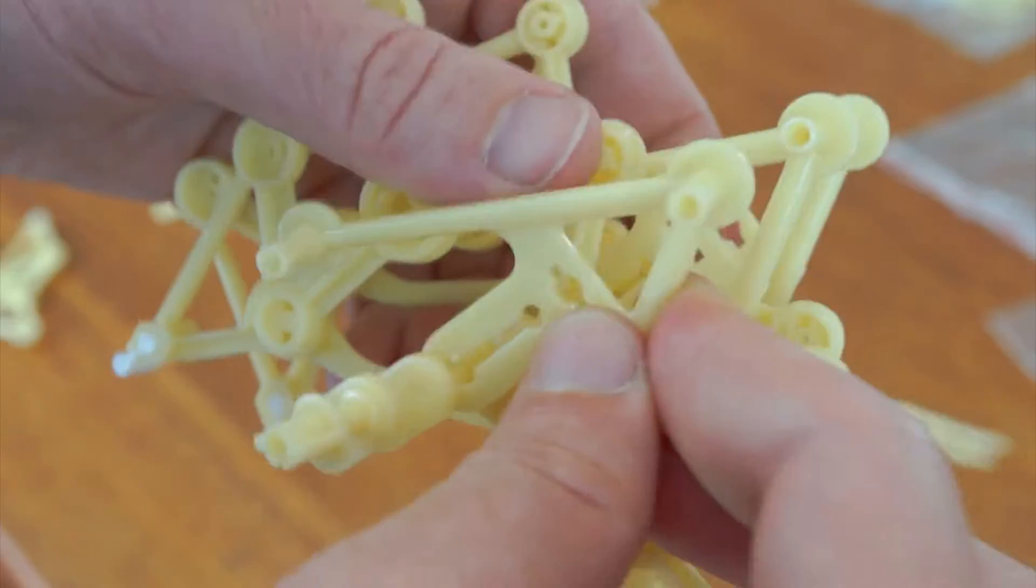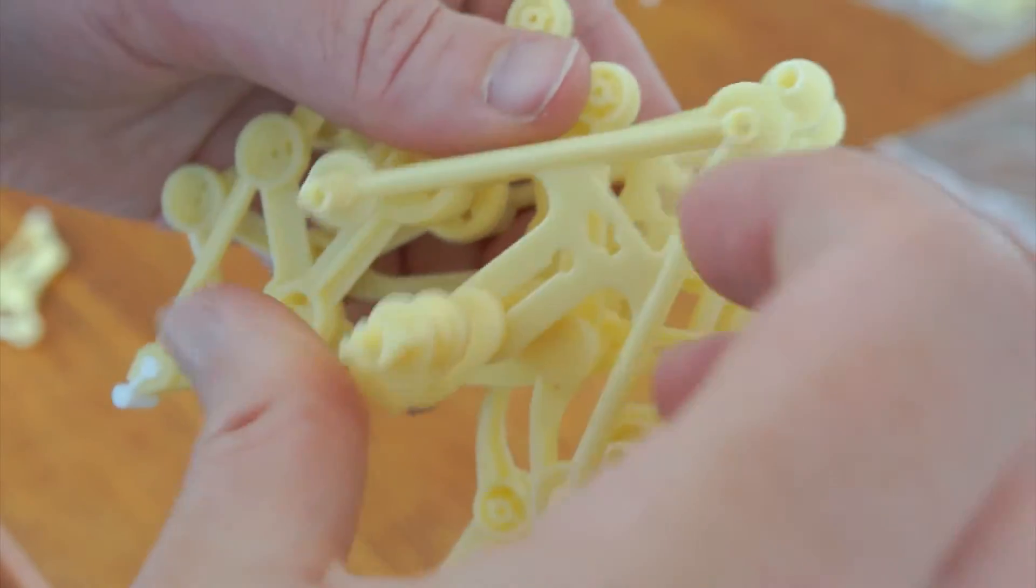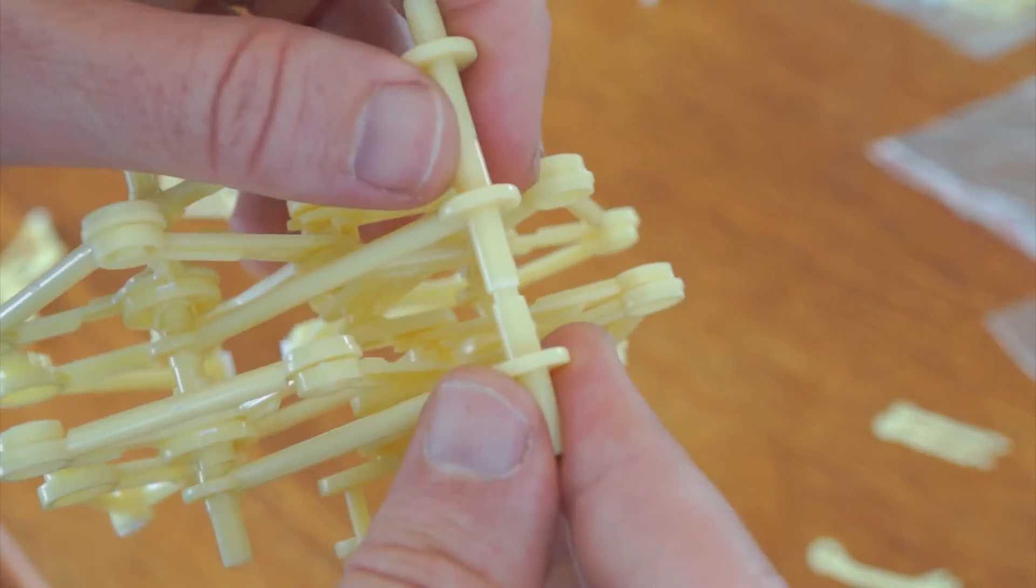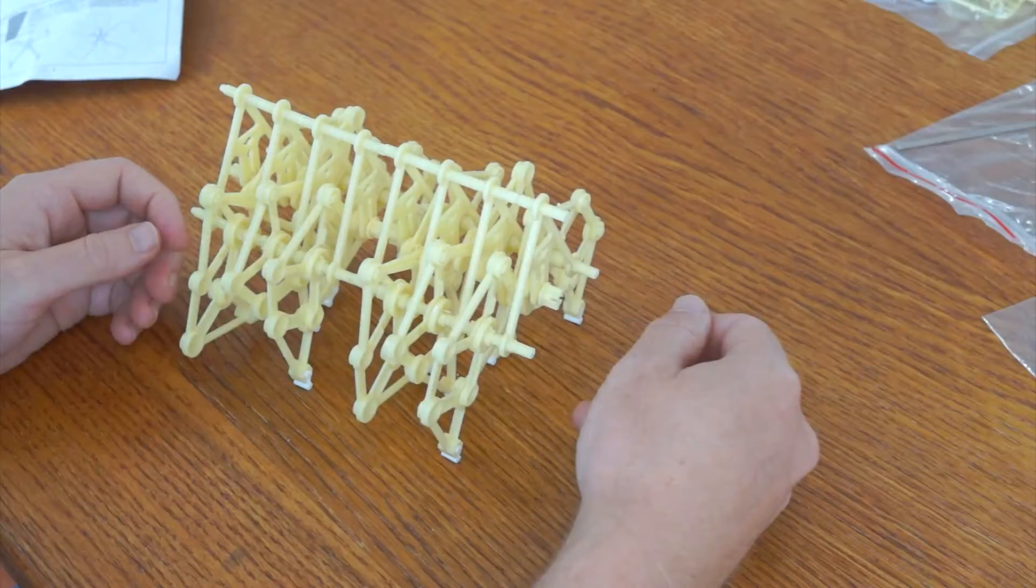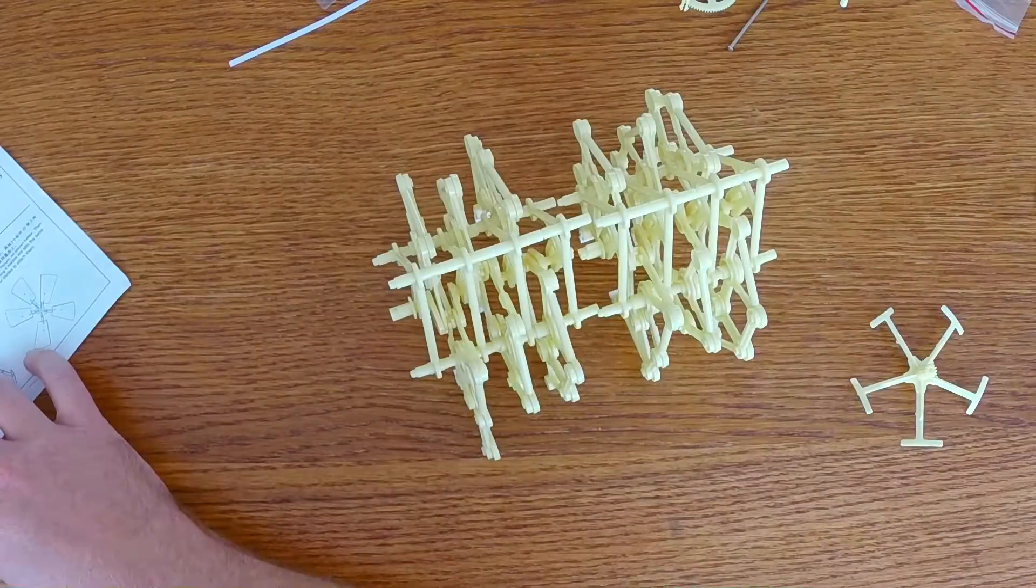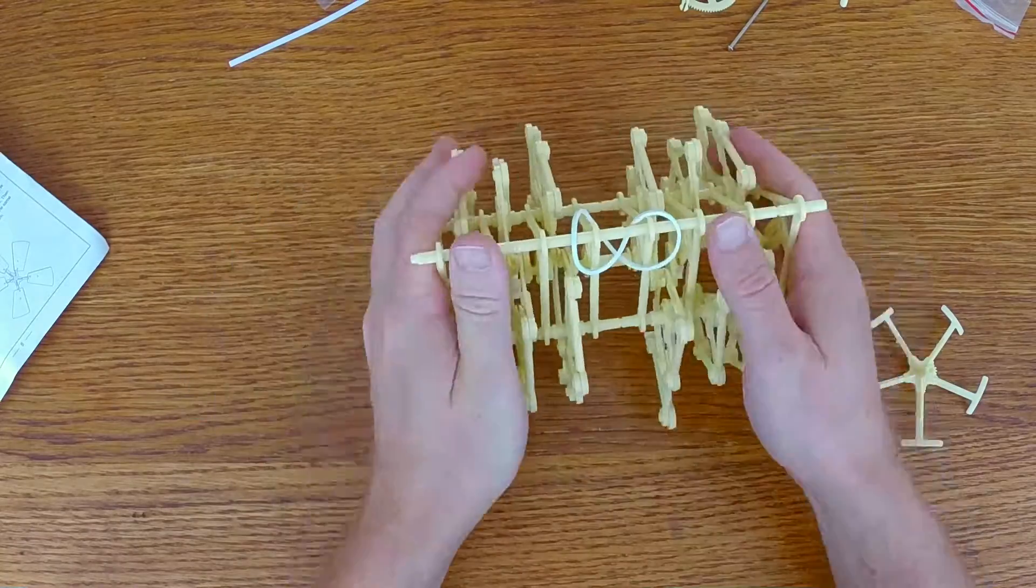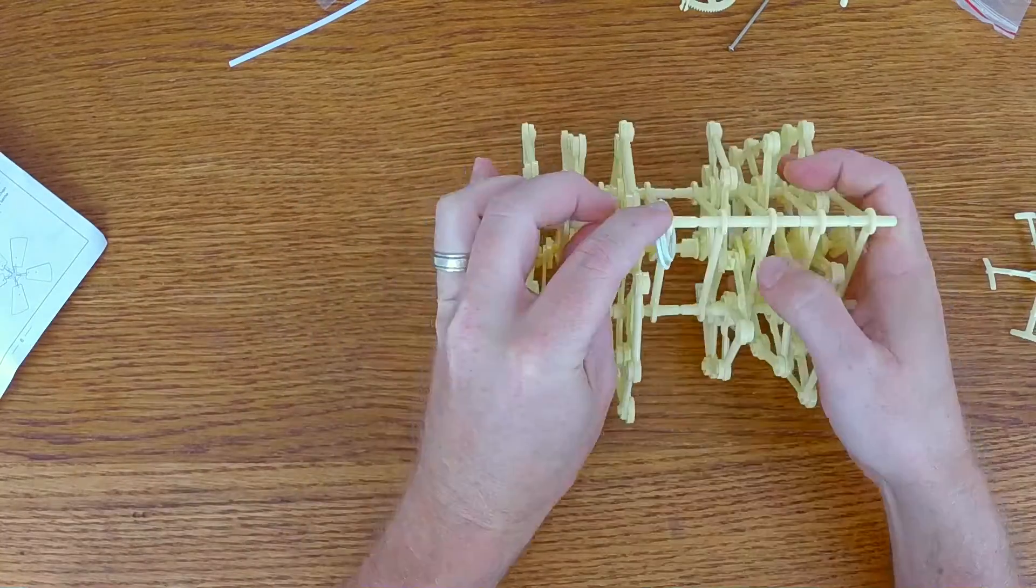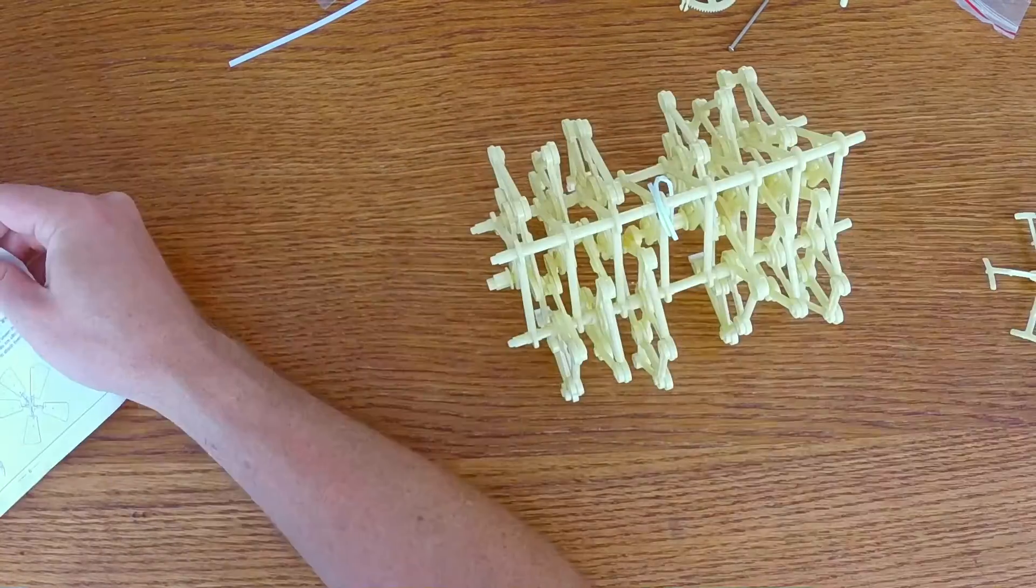Now here's an important point. These A-frames, I learned a little too late, they are asymmetrical. They have a protrusion point that helps them link into each other. So don't get too far along before you realize that those A-frames are meant to stack just in one way.